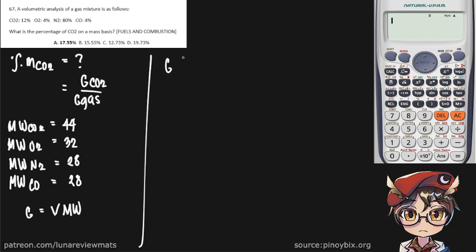So the G of our CO2 is, this one's 12%, so 0.12. Molecular weight is 44, so that is equal to 5.28. Next, the G of our oxygen, 4%, so 0.04 times 32, that should be 1.28.